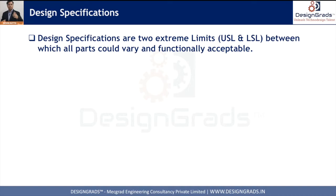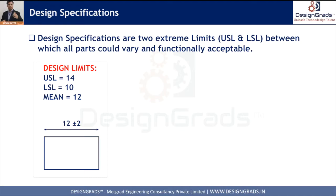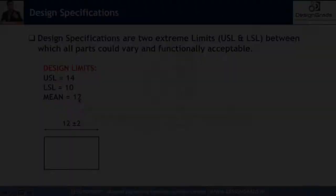We have a block here and the width of the block is 12 plus or minus 2. So the Upper Specification Limit is 12 + 2 = 14, and the Lower Specification Limit is 12 − 2 = 10.